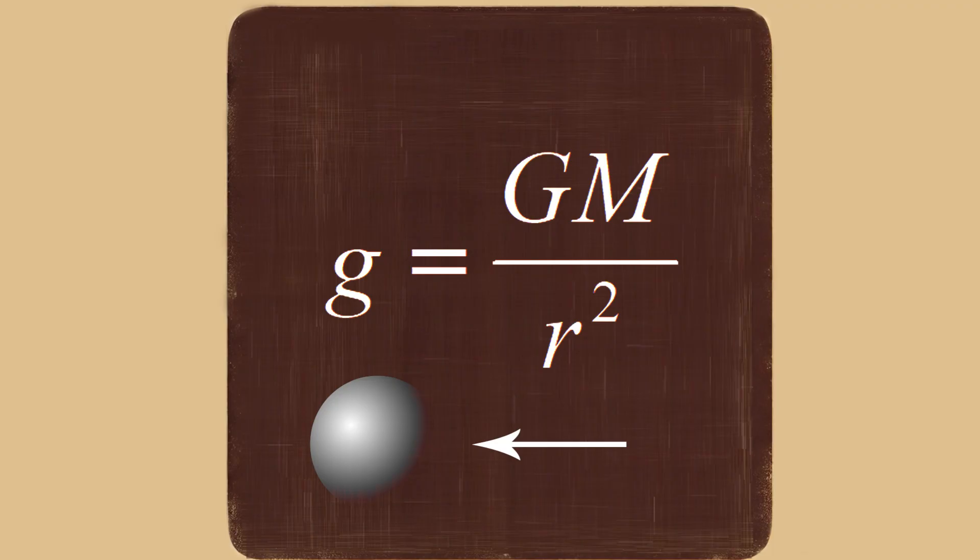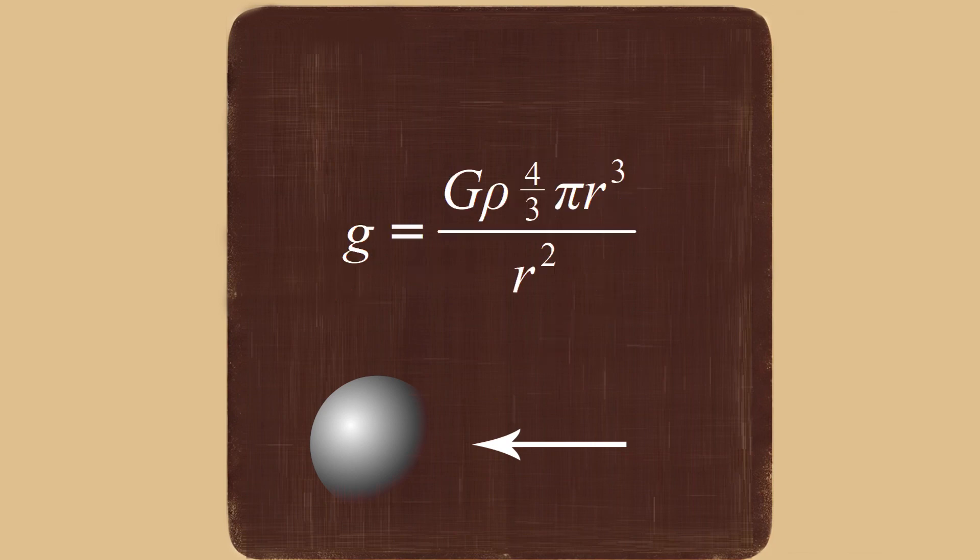As r increases, you approach zero. However, that's only if the universe is empty. That's if the ball is in its own universe and there is nothing else in the universe affecting the metric.